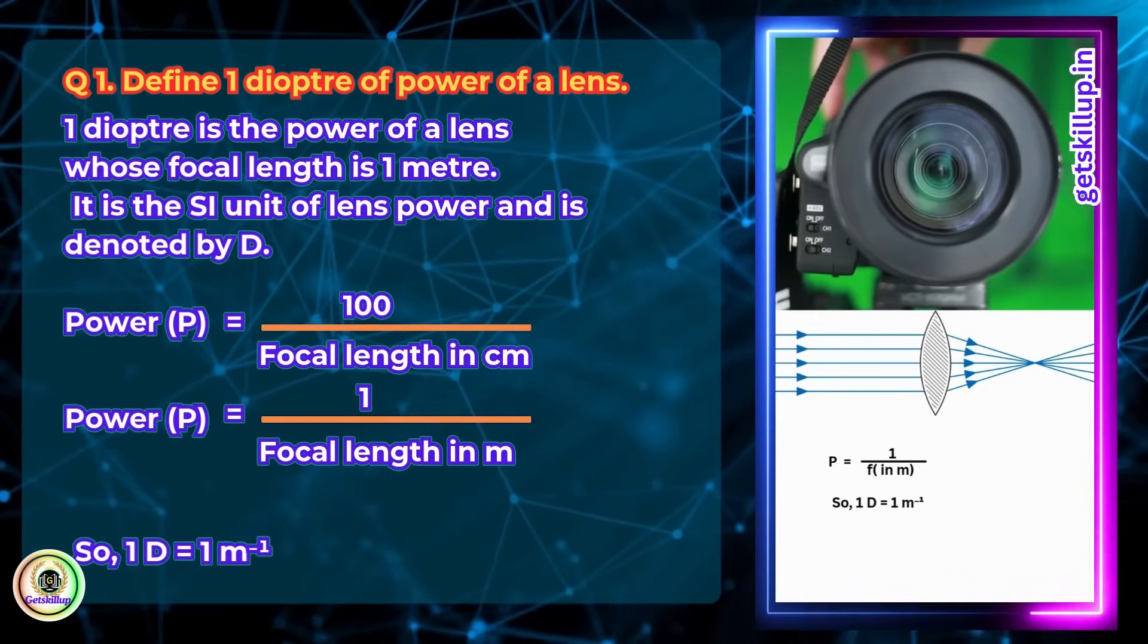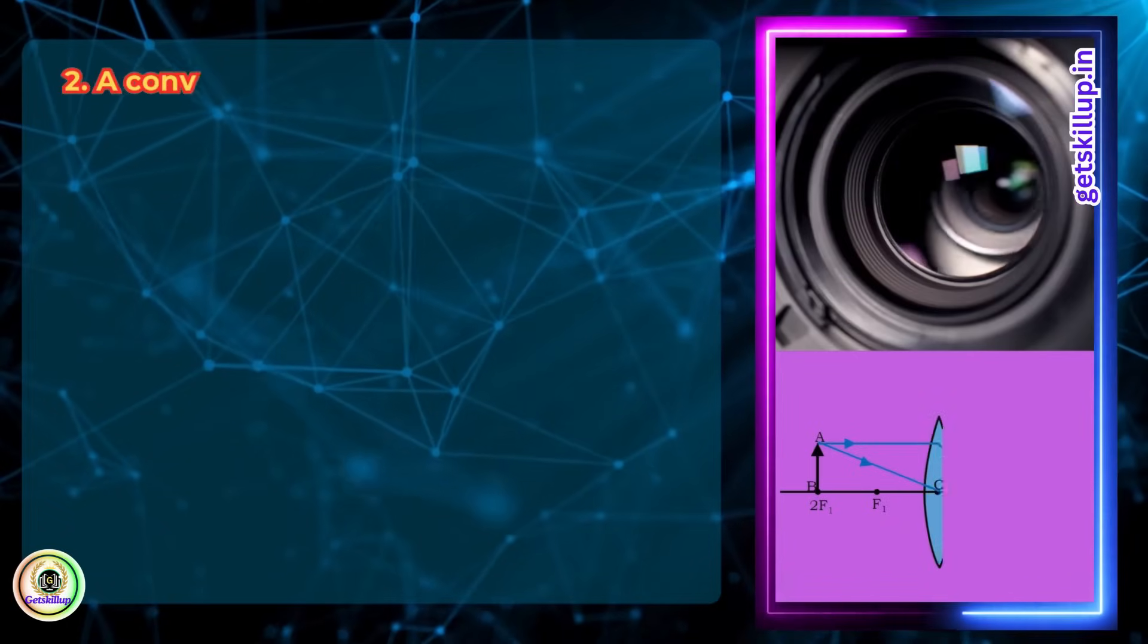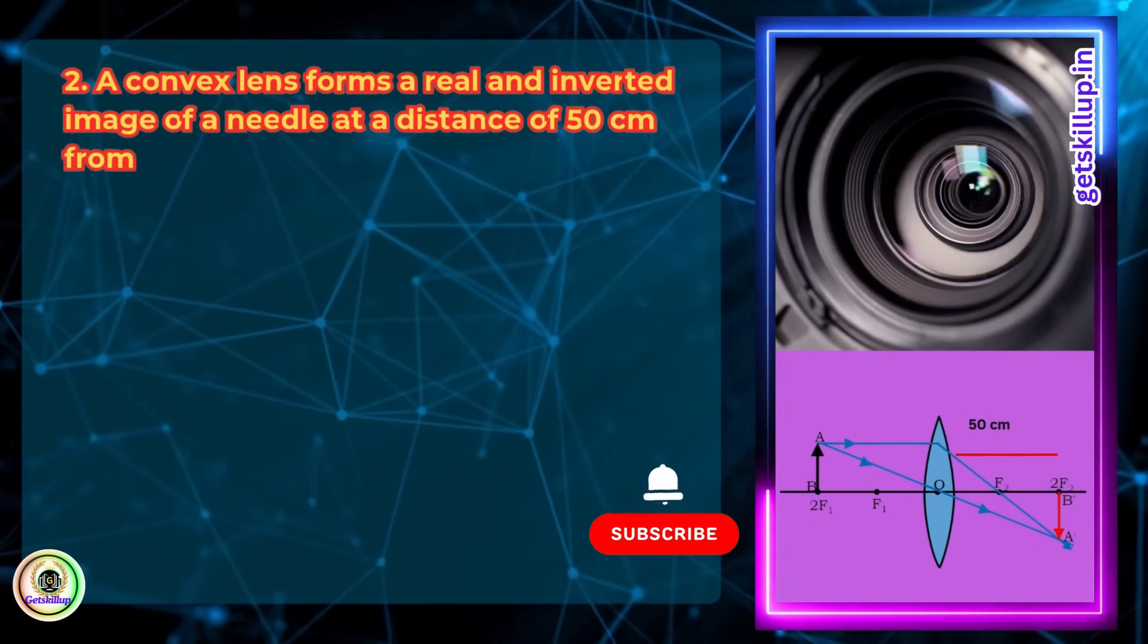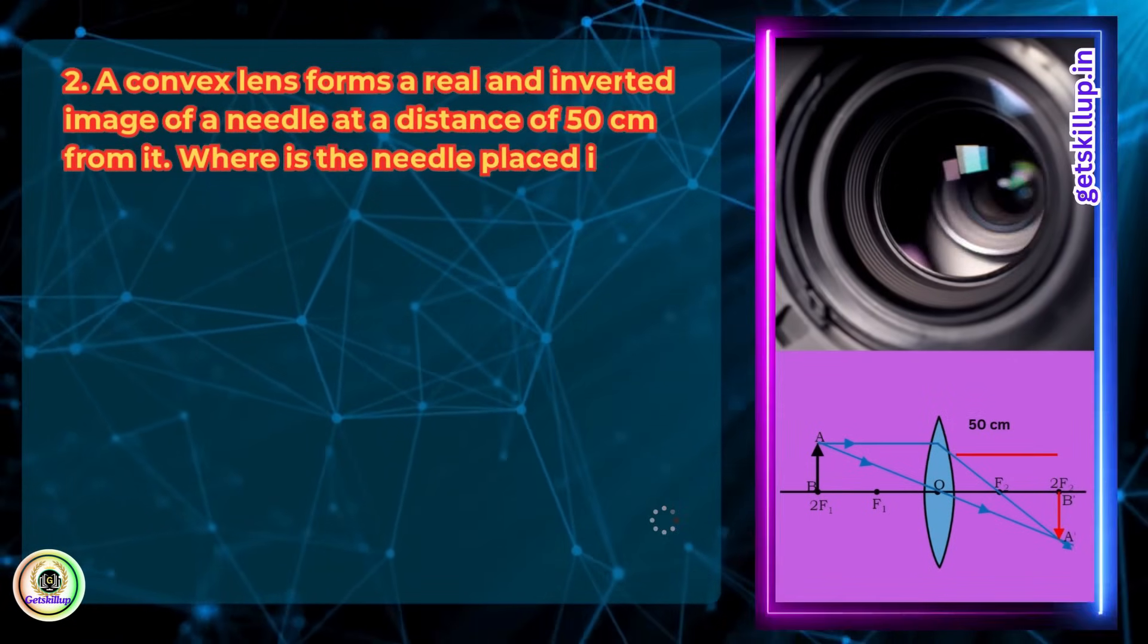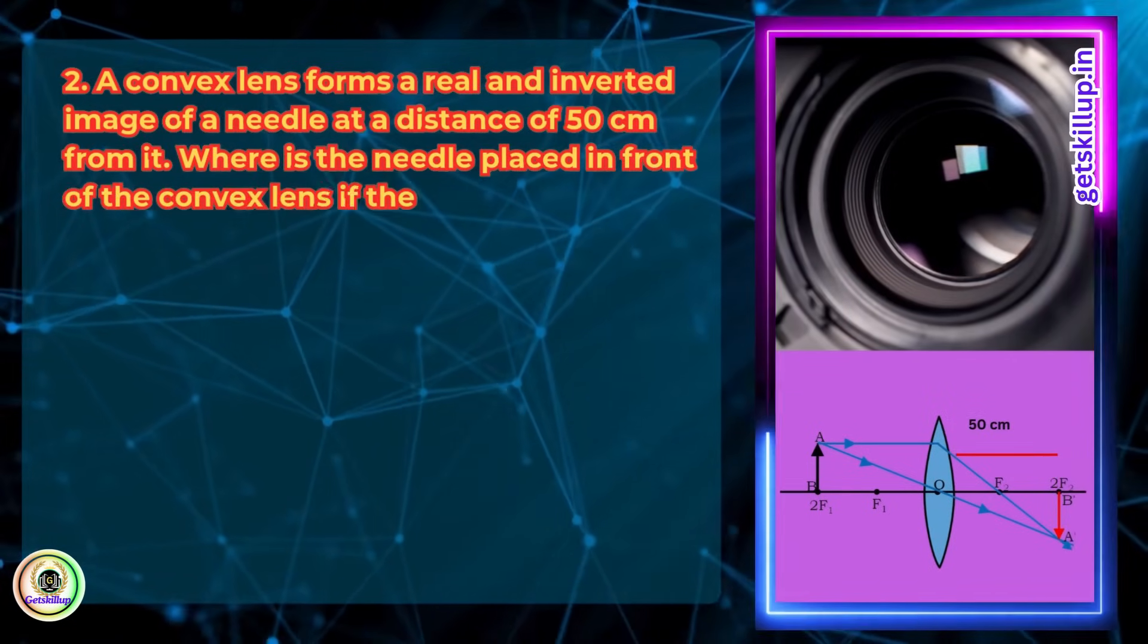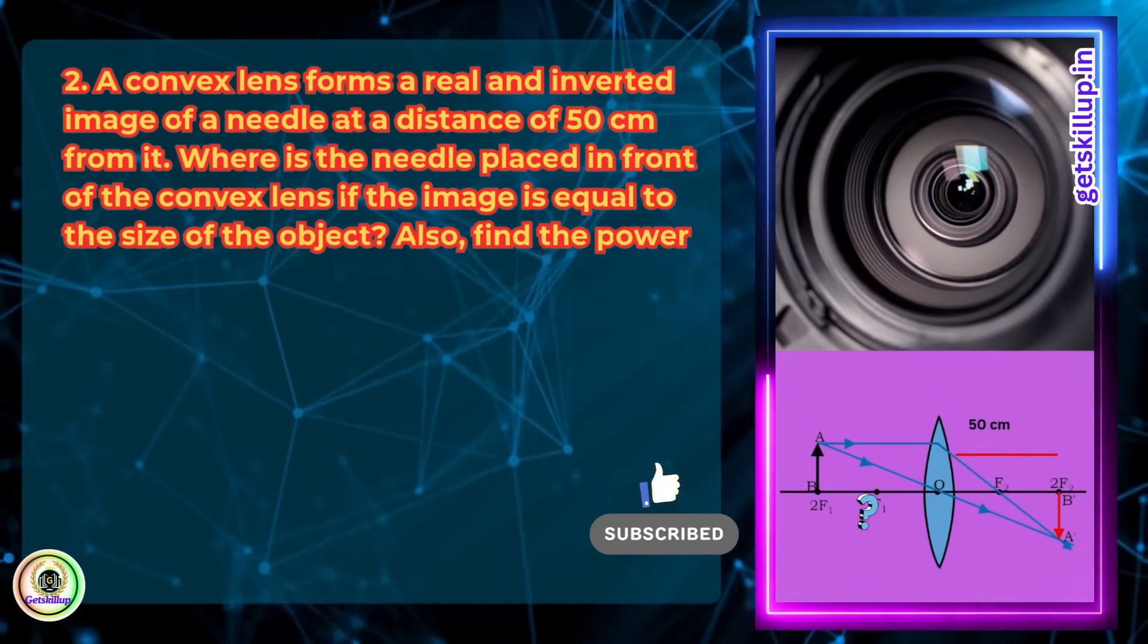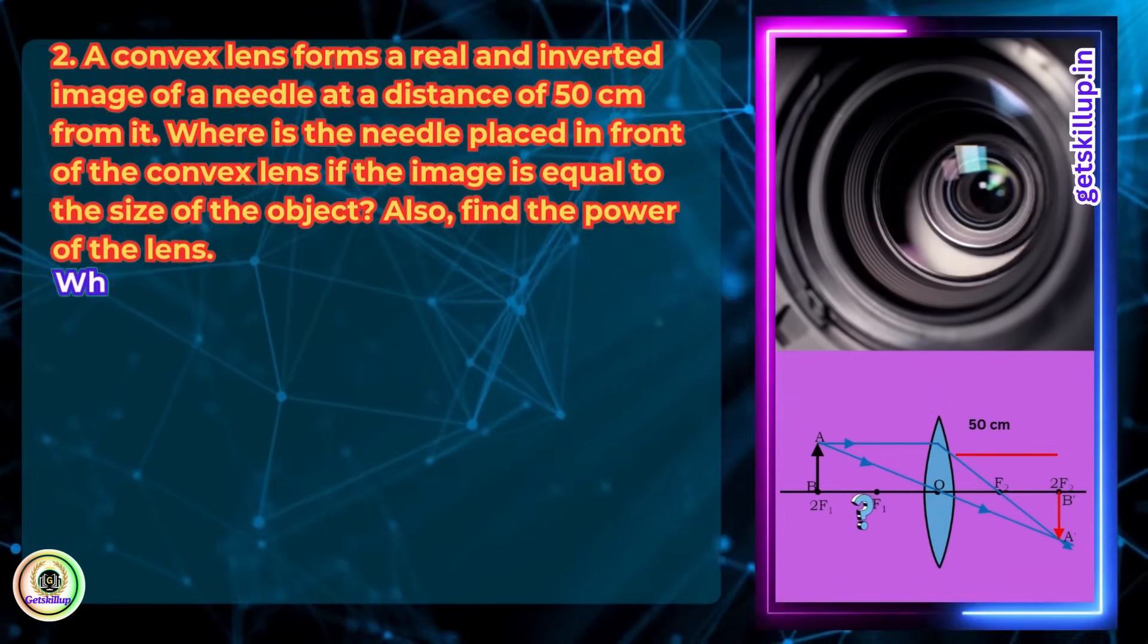= 1 m⁻¹. Question 2: A convex lens forms a real and inverted image of a needle at a distance of 50 cm from it. Where is the needle placed in front of the convex lens if the image is equal to the size of the object? Also, find the power of the lens.